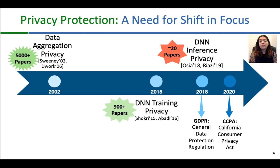Apart from scientific research on privacy, international regulations are also moving fast to keep up with technological advances. In 2018, the European Union set the General Data Protection Regulation, and more recently, starting January 2020, the state of California set similar regulations named the California Consumer Privacy Act for entities using the data of its residents.